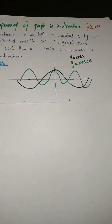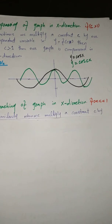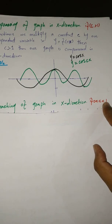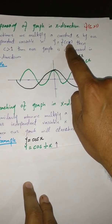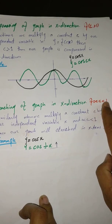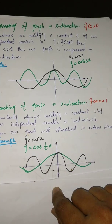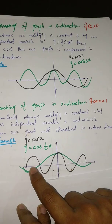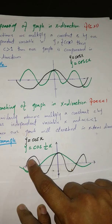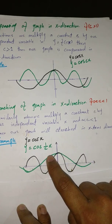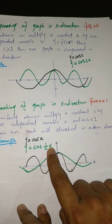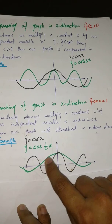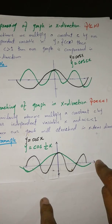The next case is stretching of a graph in the X direction. When C is between 0 and 1 and we multiply C by our independent variable X, giving Y = f(C·x) with C between 0 and 1, our graph will be stretched in the direction of X. When we multiply by a number between 0 and 1 by our independent variable X, the graph is stretched in the direction of the X axis.